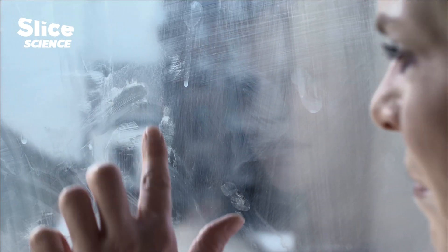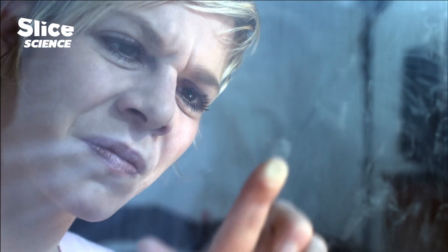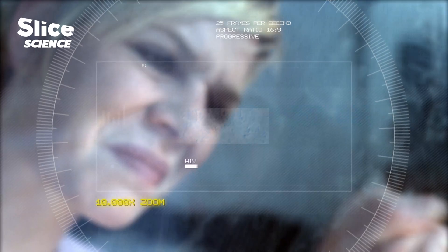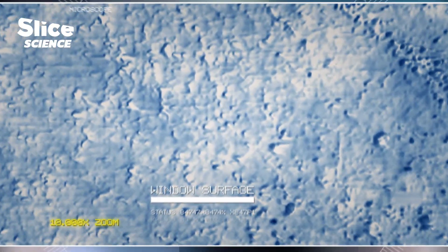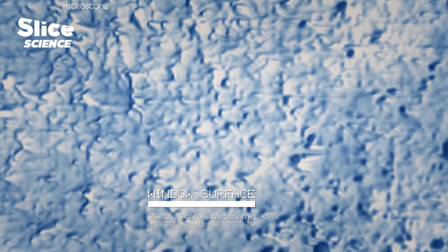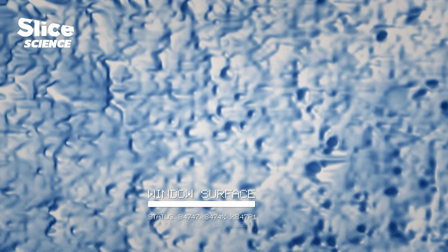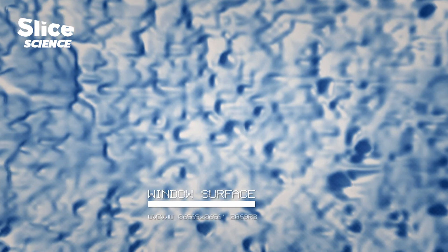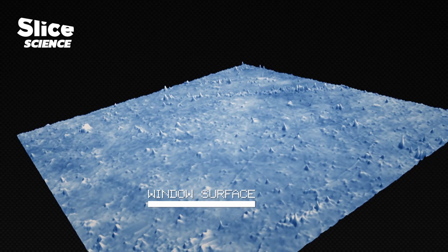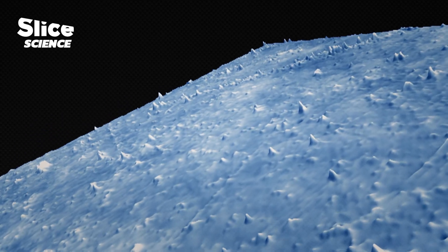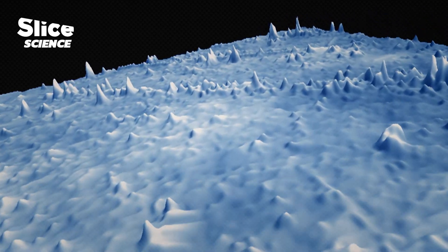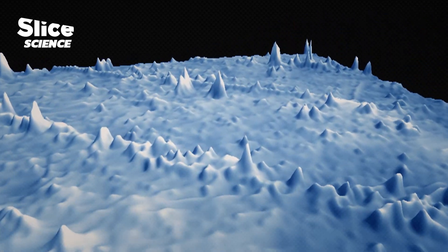So why does dirt stick so stubbornly to glass? It's a smooth surface, so surely dirt shouldn't really stick to it. An electron microscope exposes the glass pane as anything but smooth. Magnified ten thousand times, its surface looks more like a landscape of hills and valleys. It's created when the main raw material quartz sand and the added chemicals bond together, and these valleys are excellent places for dust and dirt particles to get a foothold.